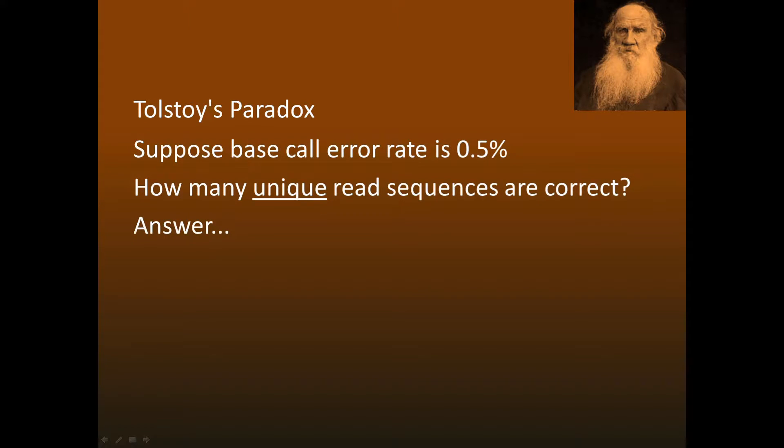Suppose the base call error rate is about 0.5%, which is typical for Illumina after stringent quality filtering. How many of the sequences in the reads are correct?